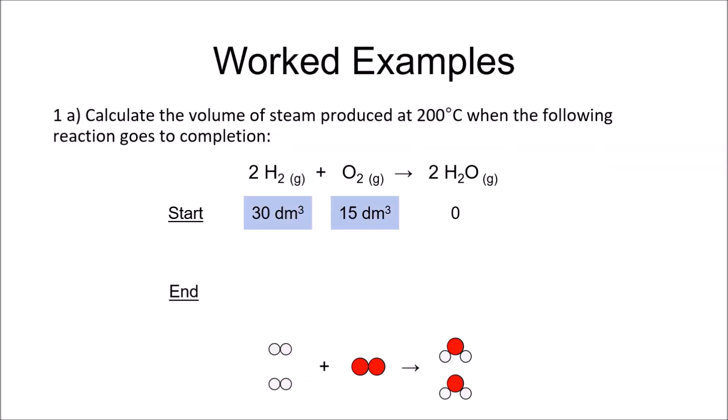In this question, they want us to calculate the volume of steam produced at 200 degrees C when the following reaction goes to completion, starting with 30 cubic decimetres of hydrogen and 15 cubic decimetres of oxygen. Now I'm not going to waste my time calculating how many moles there are. If two volumes of hydrogen react with one volume of oxygen, then 30 react with 15 to produce 30 of steam with no reactants remaining.